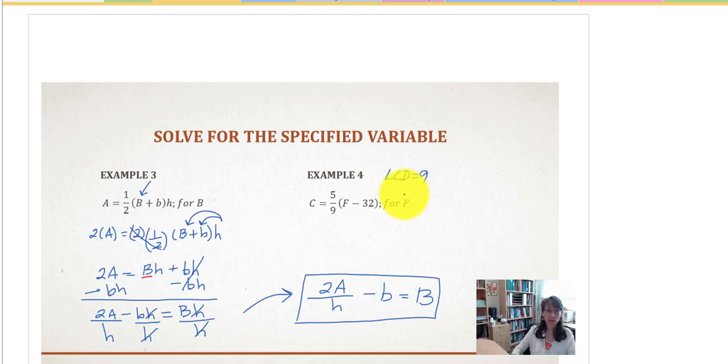So, 9 times C would equal 9 times this fraction, 5 ninths, multiplied by the quantity F minus 32. What happens is the 9's are going to reduce, leaving us 9C is equal to 5 times the quantity F minus 32. With parenthesis, we'll need to clear by distributing 5 to each term in this quantity. We'll end up with 9C equals 5F minus 5 times 32 and that's 160.